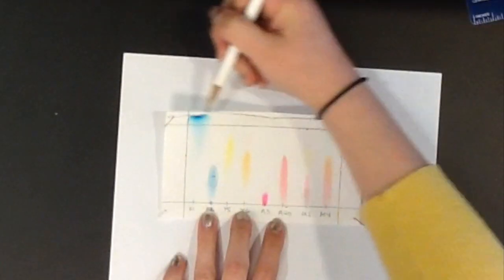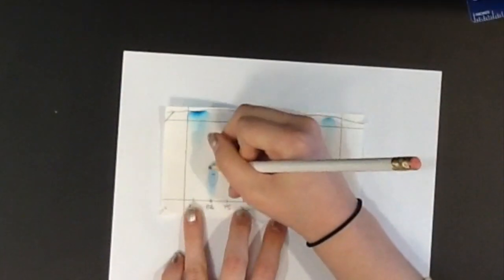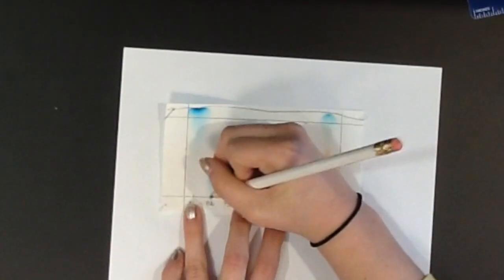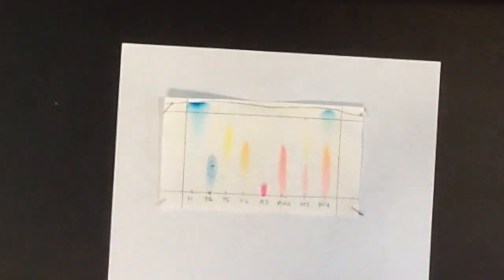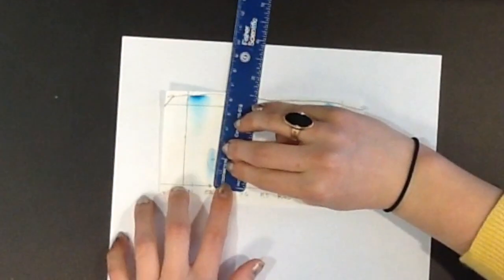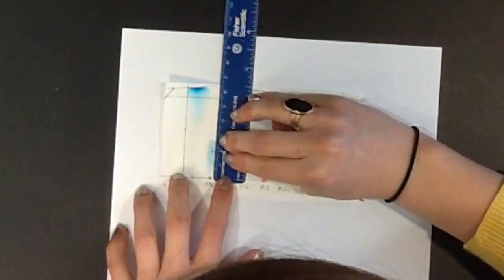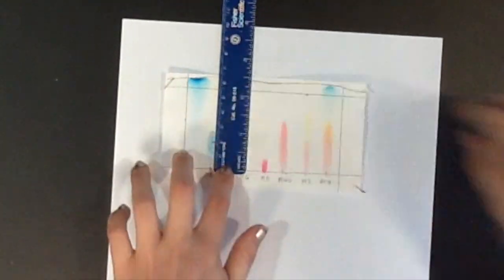For reference, this top line is the solvent front. Now we can measure for RF. Measure from the origin to the middle of the oval. This is the distance traveled by the sample. The value for this is 1.85 cm.